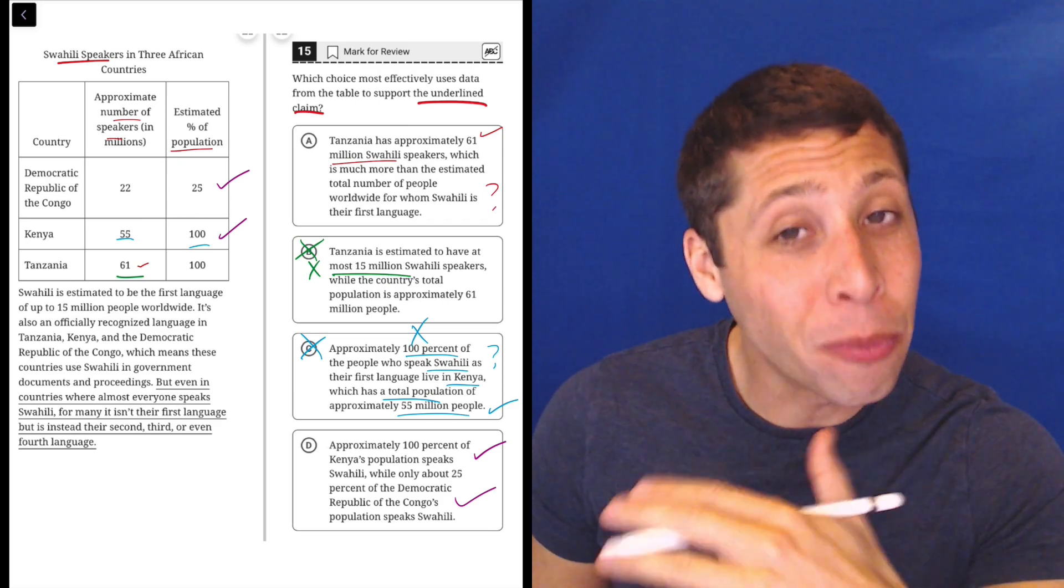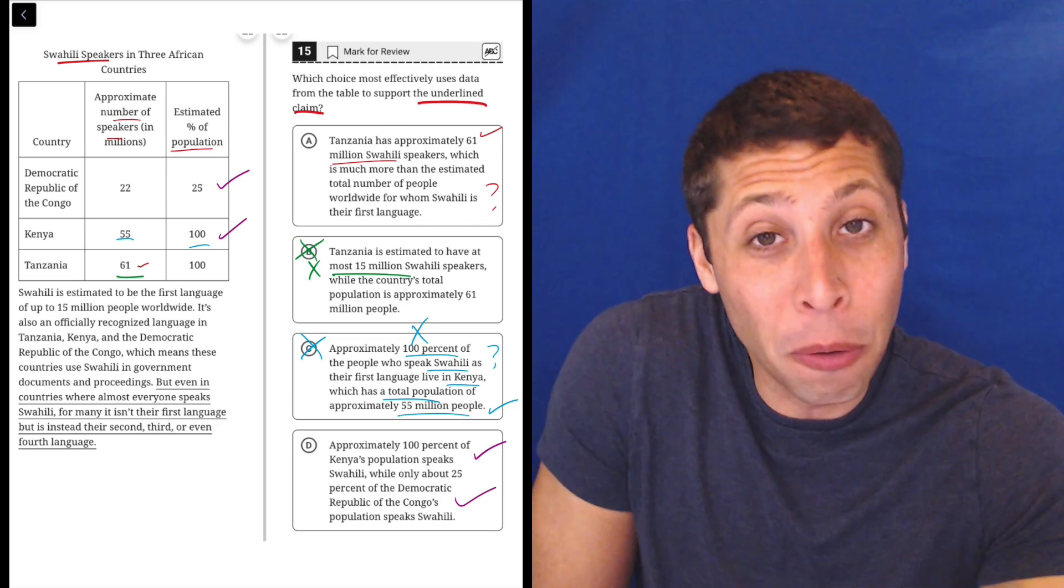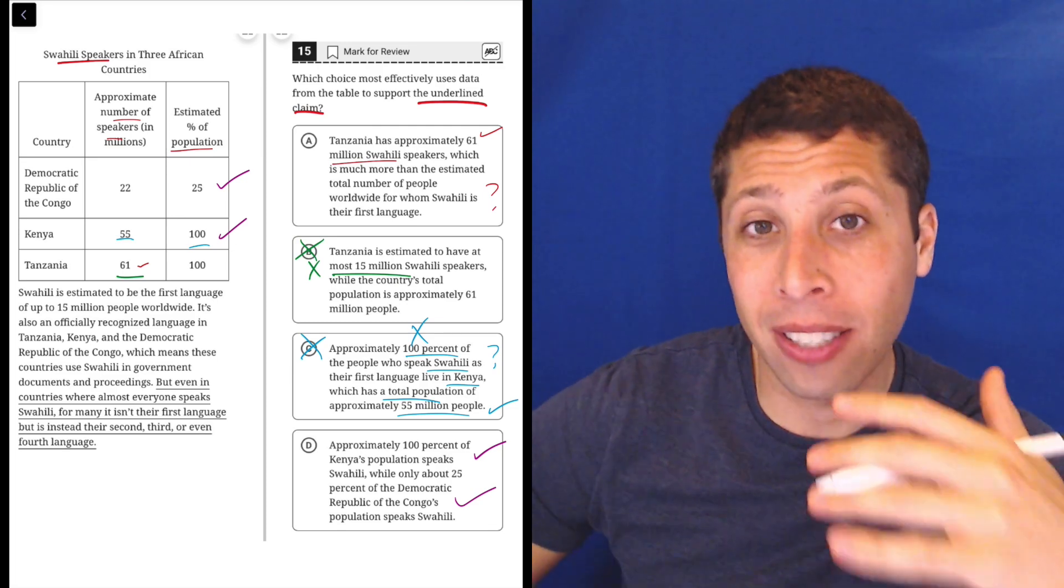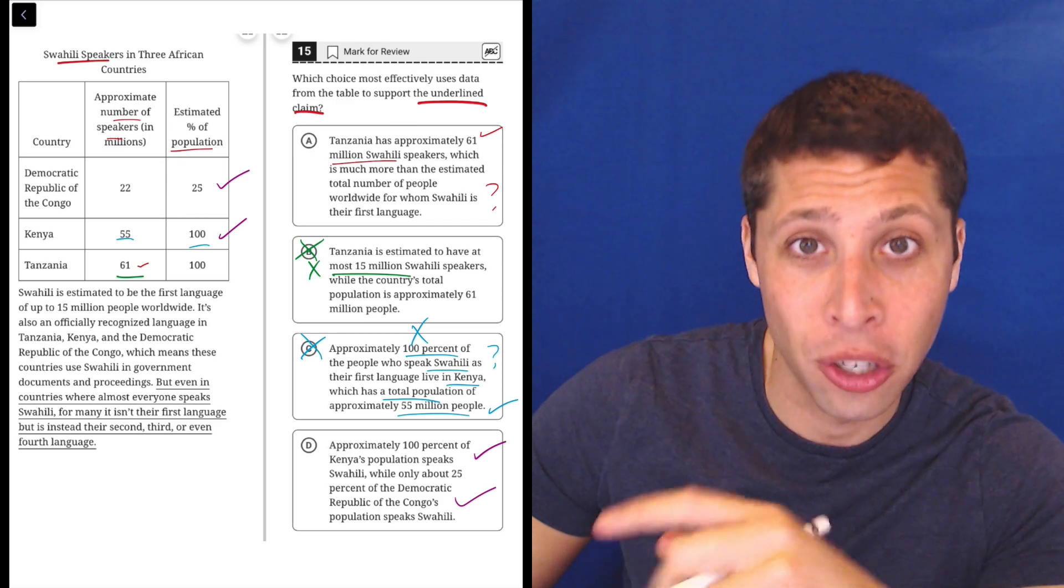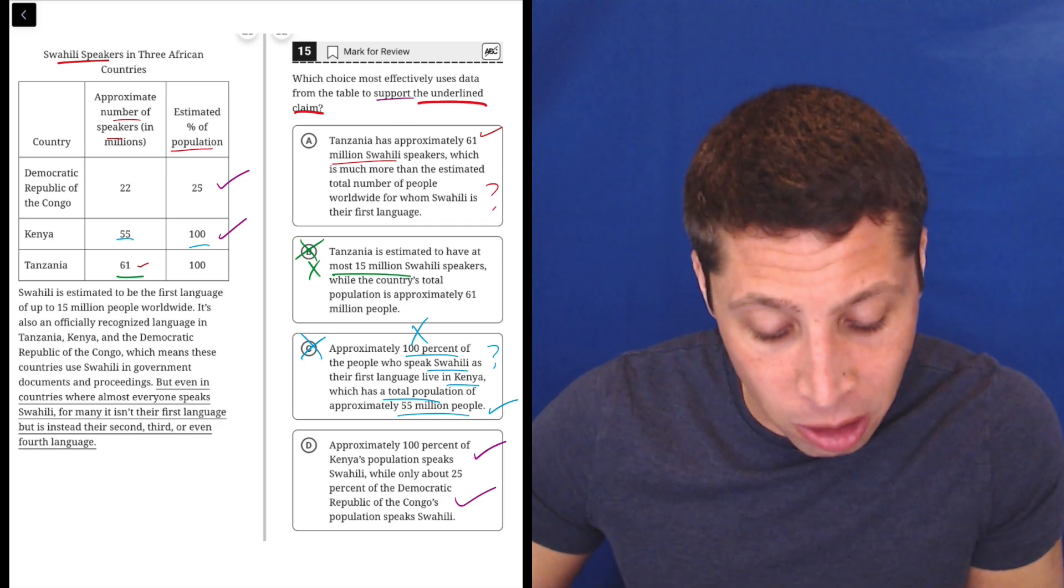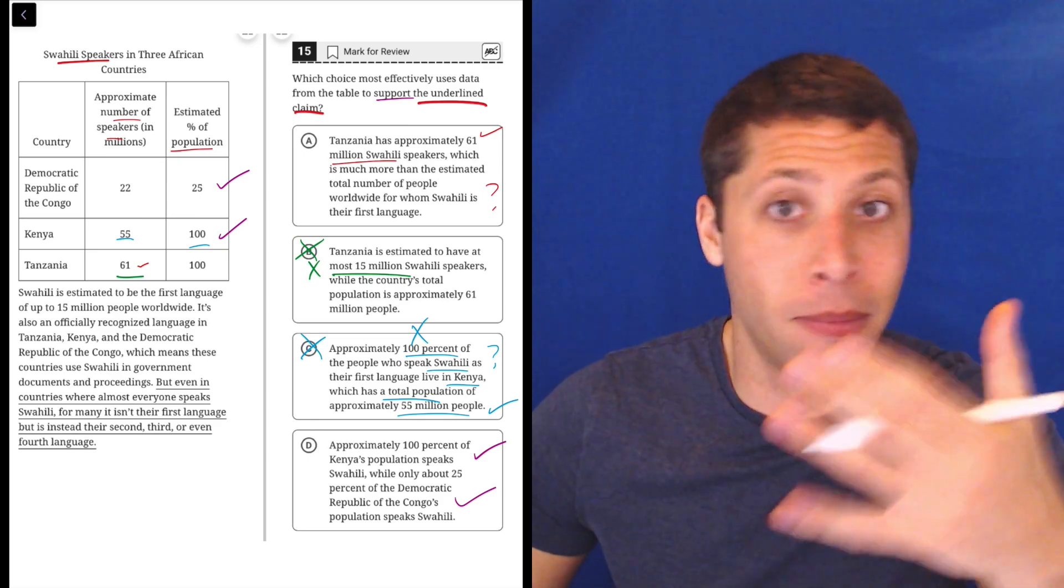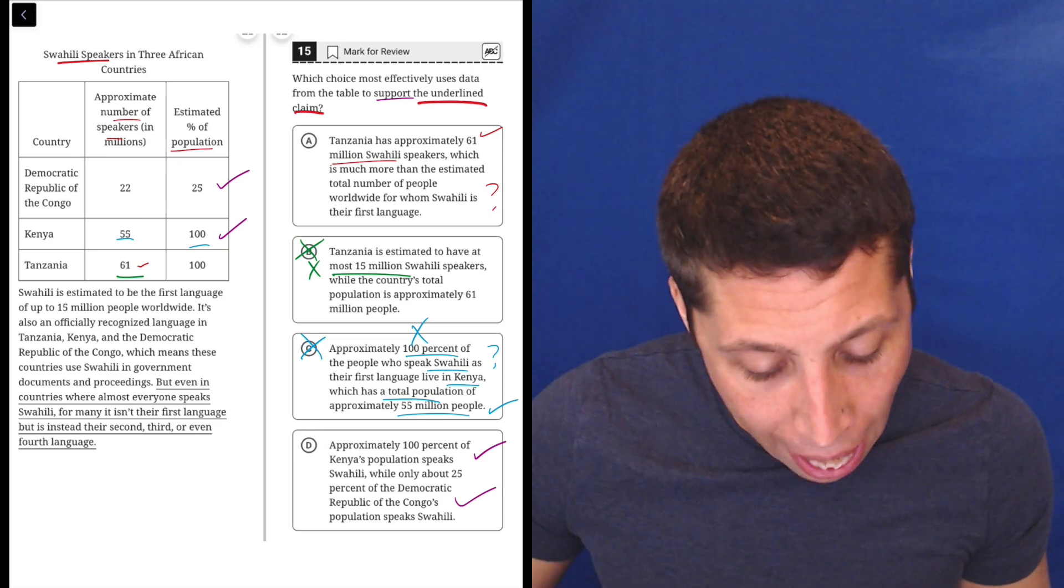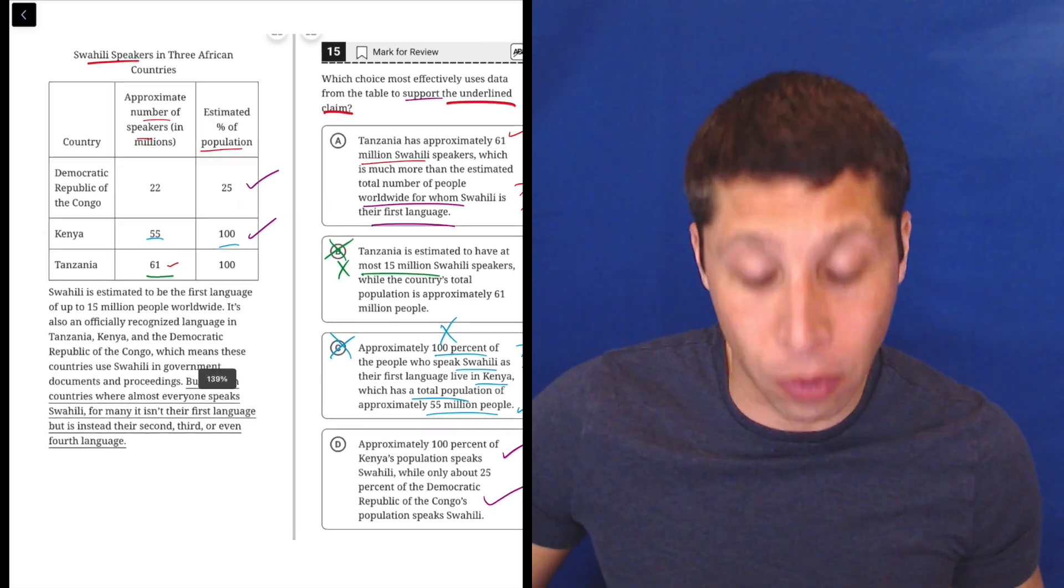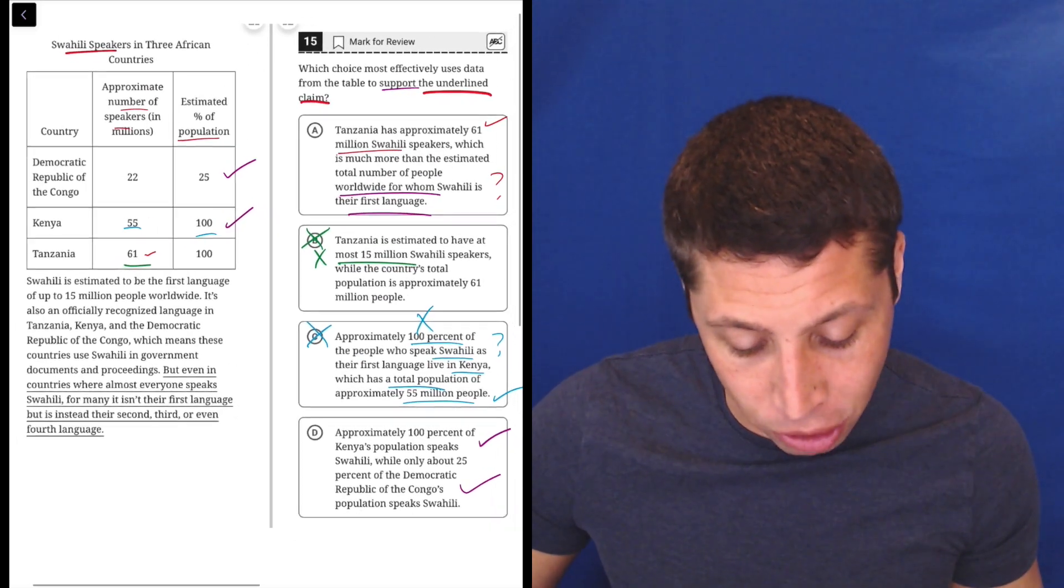No, because we haven't actually proven A wrong. We've just proven part of it right. It's not the same thing. And so here is a good example where we are going to need to go to the passage because we need to know what the student is saying so we can support what they're saying. And this other fact that we didn't know before, how many people worldwide have Swahili as their first language.